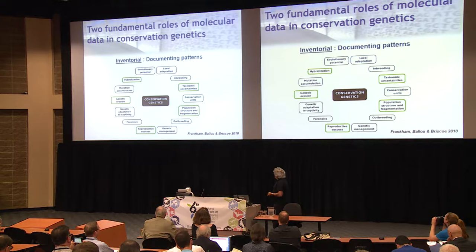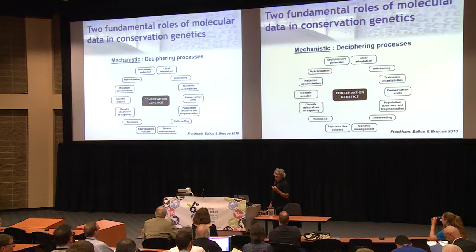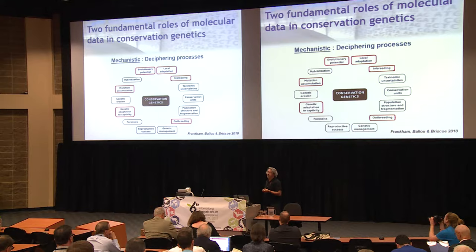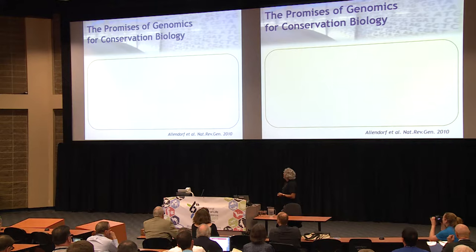The second aspect is more mechanistic, which is about deciphering processes. And this is where we still have a lot to learn about. For example, what is the genetic basis of local adaptation? What do we mean by evolutionary potential? How does genetic adaptation to captivity work? And that's where we're putting big hopes in the use of modern genomics for conservation biology.